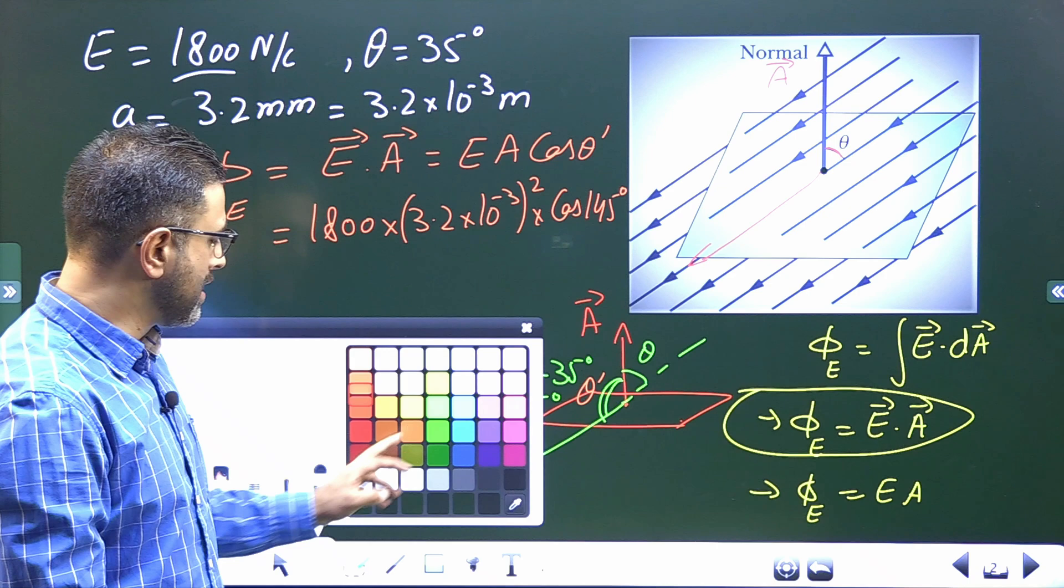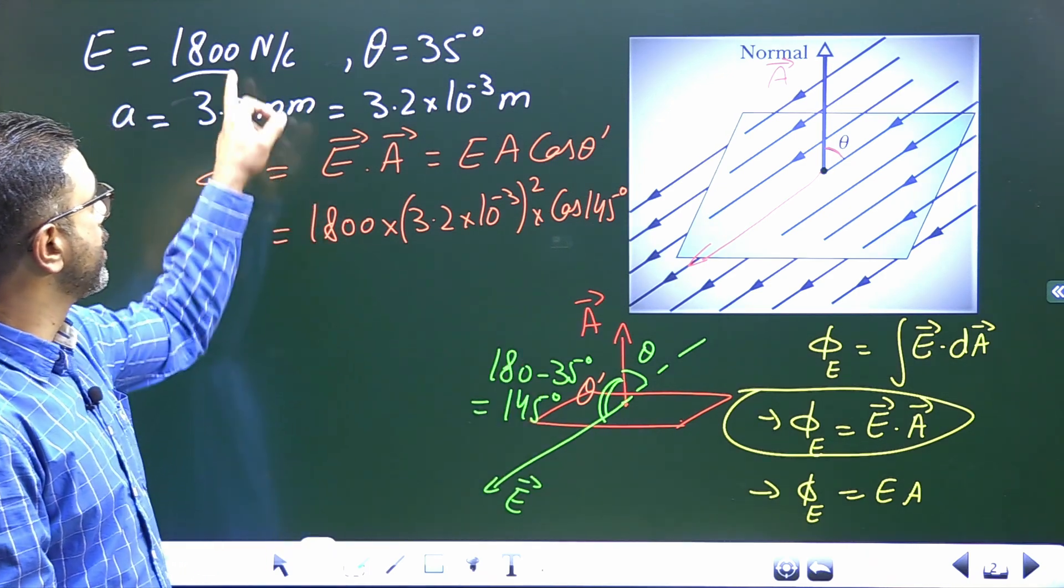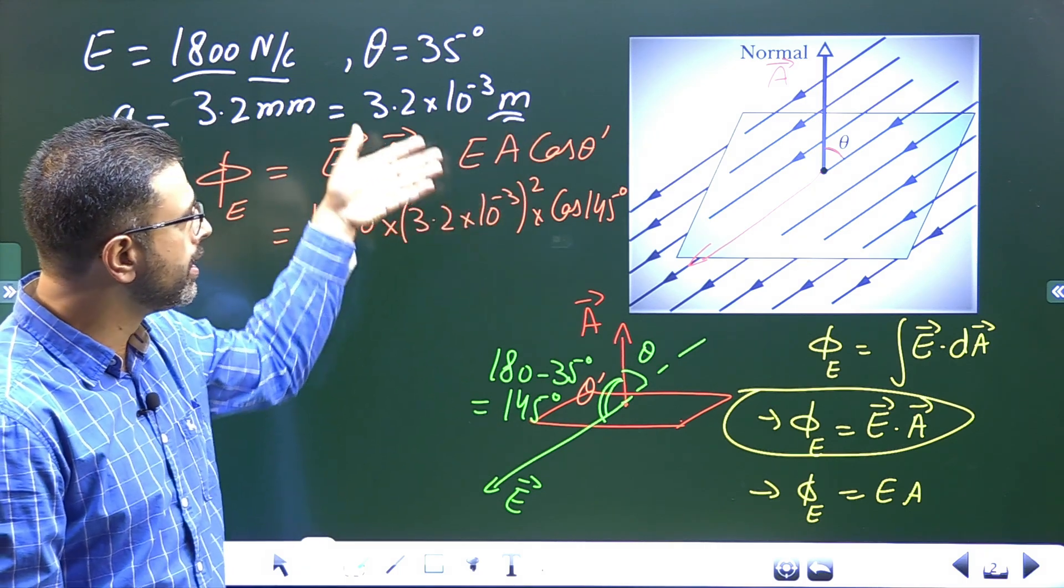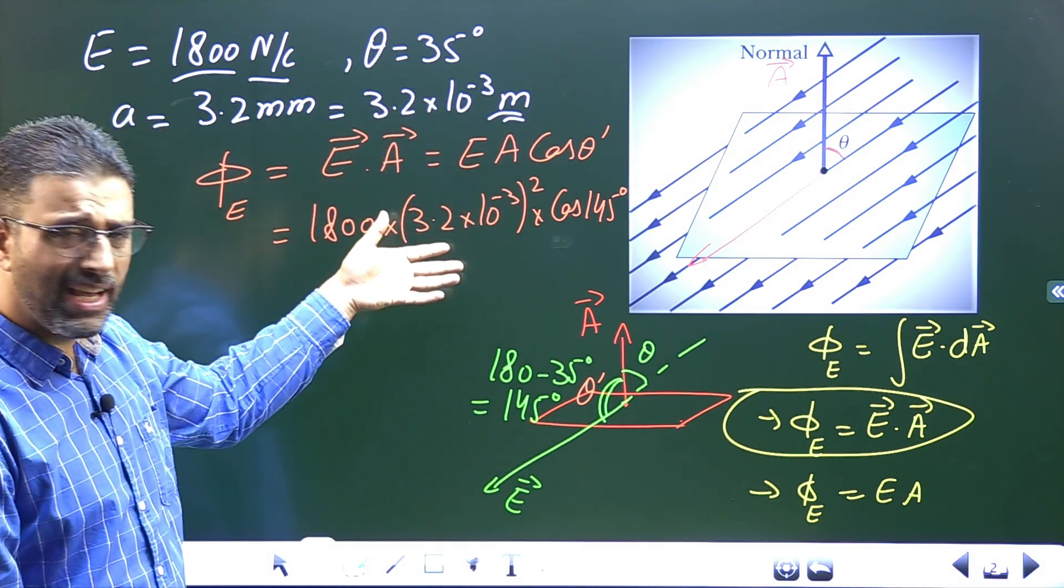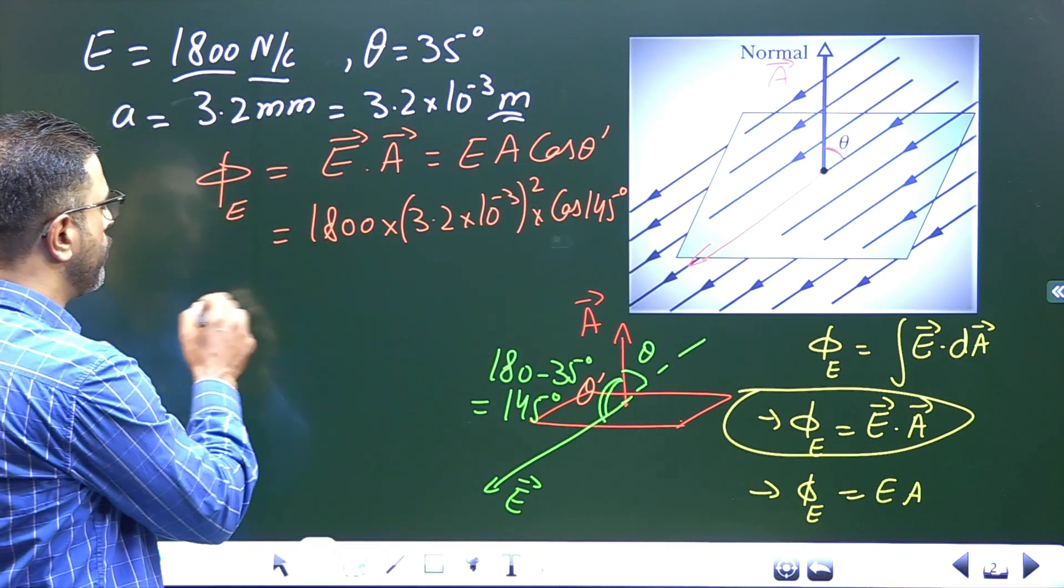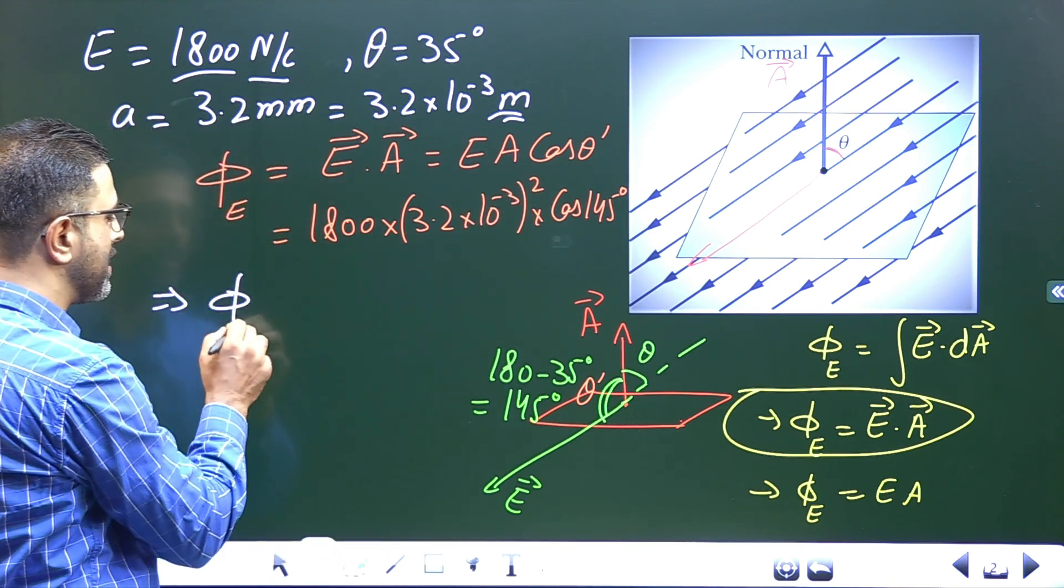Now, everything is in SI system. Electric field is 1800 Newton per Coulomb, so that is SI system. Area, meter square, it will be here, so again SI system. Cos of 145 is just unit less. So what we will get will be also in SI system.